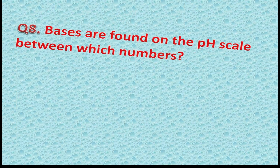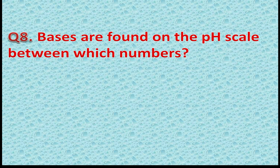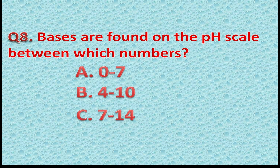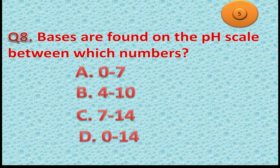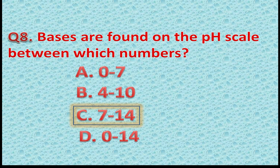Question 8: Bases are found on the pH scale between which numbers? Option A: 0 to 7. Option B: 4 to 10. Option C: 7 to 14. Option D: 0 to 14. The correct answer is Option C — 7 to 14. You got one more star if you gave the correct answer.